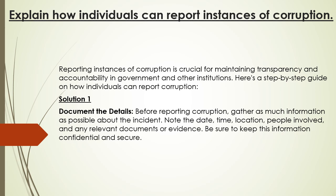Reporting instances of corruption is crucial for maintaining transparency and accountability in government and other institutions. Here is a step-by-step guide on how individuals can report corruption. Solution 1: Document the details. Before reporting corruption, gather as much information as possible about the incident — the date, time, location, people involved, and any related documents or evidence. Be sure to keep this information confidential and secure.